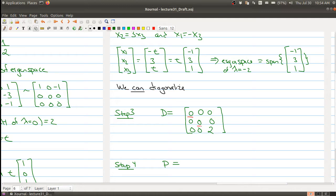Let me put a comment here: since lambda equals 0 has algebraic multiplicity 2, put it on the diagonal two times.